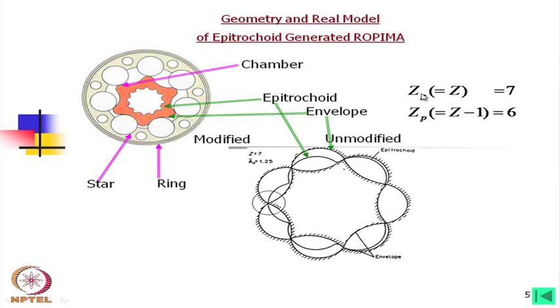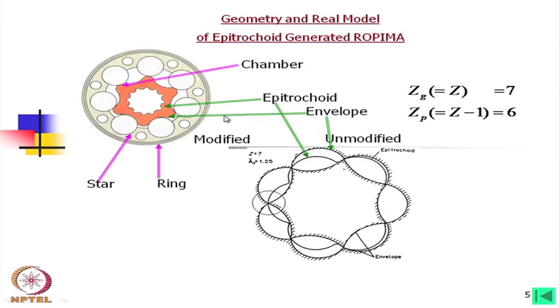We name Zg as the lobe number of the star gear and the ring gear as the outer one. In this case, the inner one has 6 and the outer one has 7. These two numbers should always be consecutive. If the ring is 7, then the star is 6. Making the ring 8 and star 7 means the number of chambers will be 8 — an even number, which is not beneficial. So always the ring gear lobe number will be 7, 9, or 5 — odd numbers — whereas the star has an even number, one less than the ring.